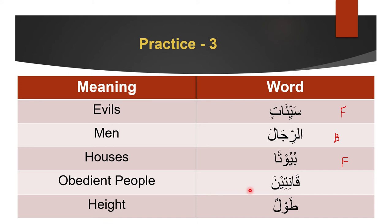Qānitīna: just look at the word — the -īna ending gives it away as masculine plural. Next: ṭawl means 'height,' it is singular and shows no signs of femininity, so it is masculine.